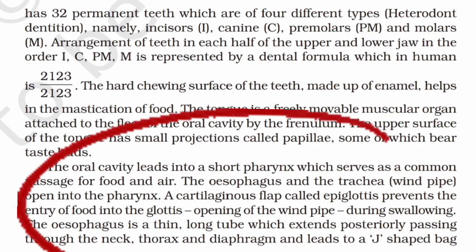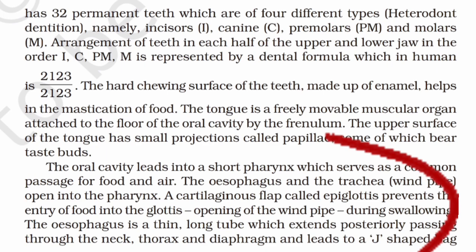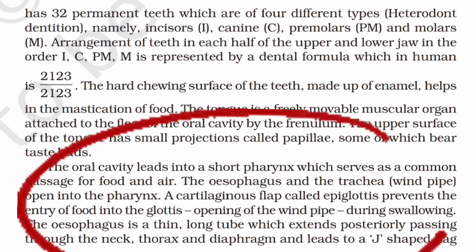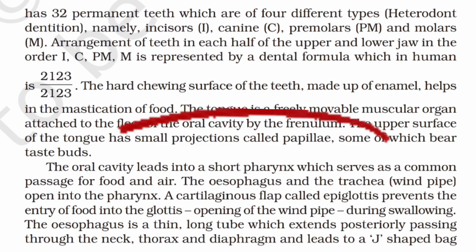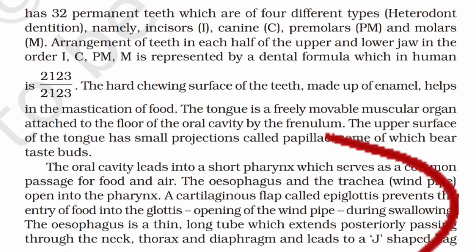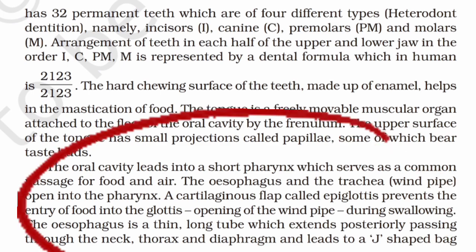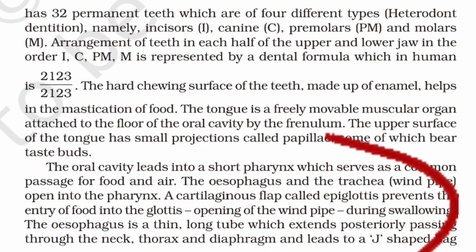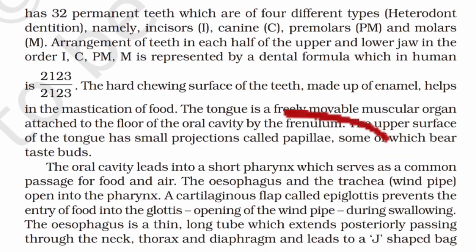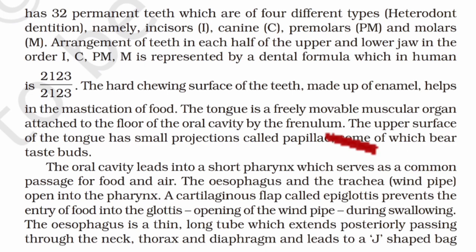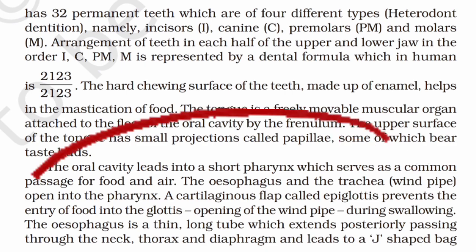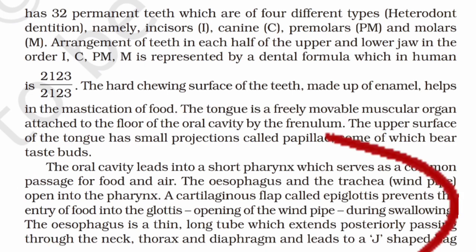For example, the line: 'A cartilaginous flap called epiglottis prevents the entry of food in the glottis, the opening of the windpipe, during swallowing.' Try and visualize it — there is a windpipe, it has the opening called glottis, and a flap called epiglottis, made up of cartilage, covers it during swallowing.